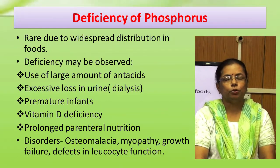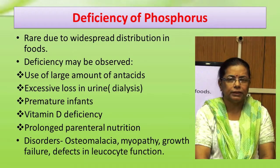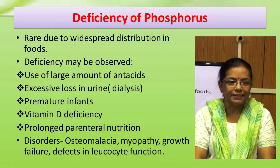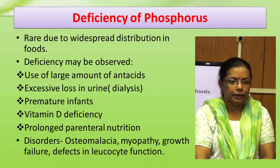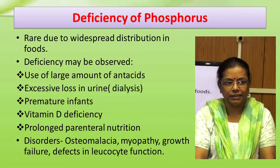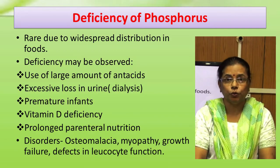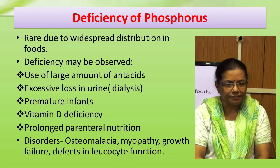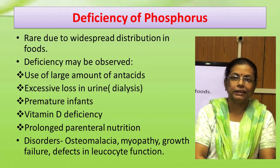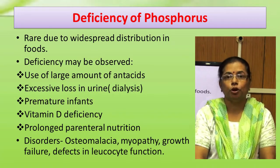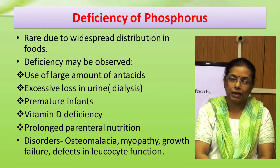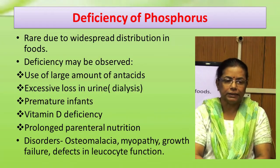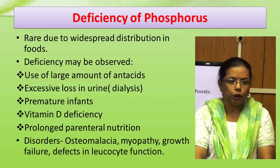Deficiency of phosphorus is not common because it is widely distributed in food. However, deficiency may occur in persons using large amounts of antacids, those suffering from excessive loss in urine, premature infants, vitamin D deficiency, and those receiving prolonged parenteral (intravenous) nutrition. Deficiency disorders include osteomalacia, myopathy, muscle disease, growth failure, and defects in leukocyte function.